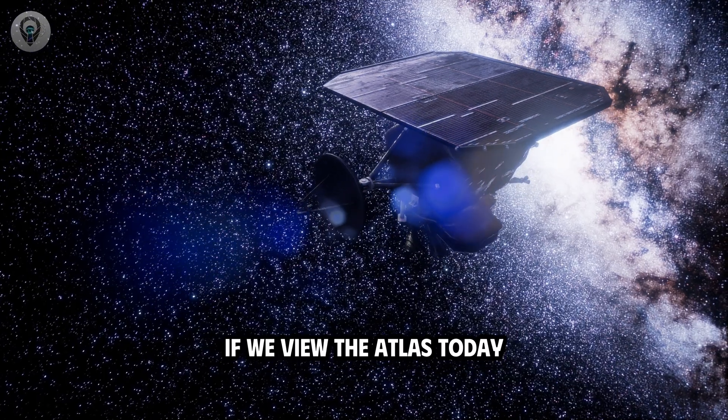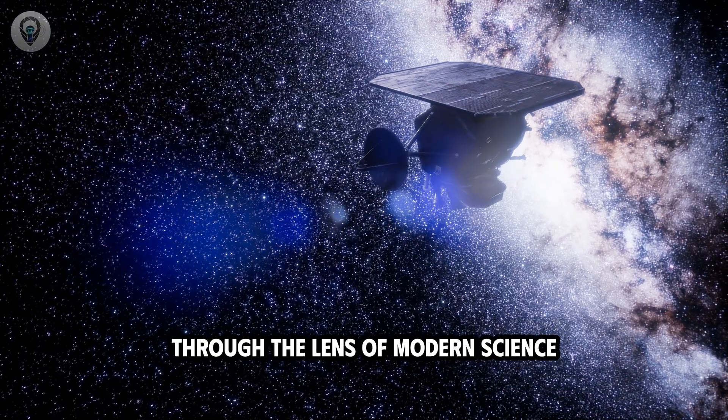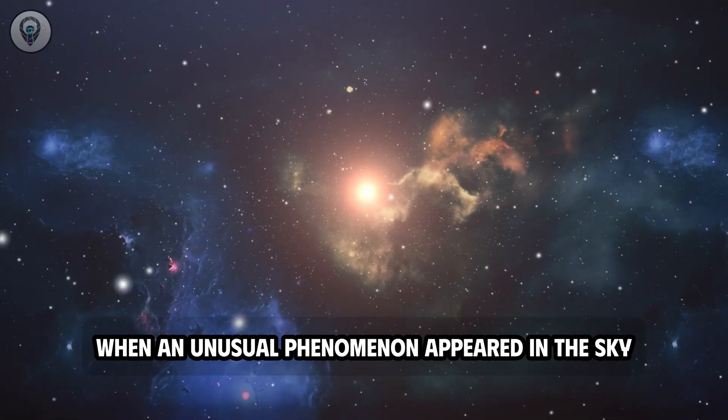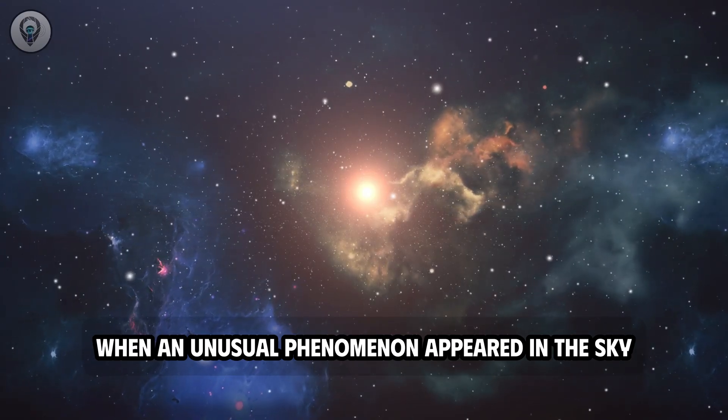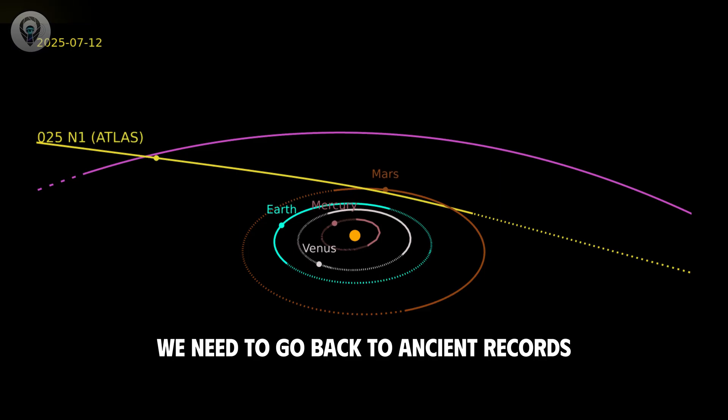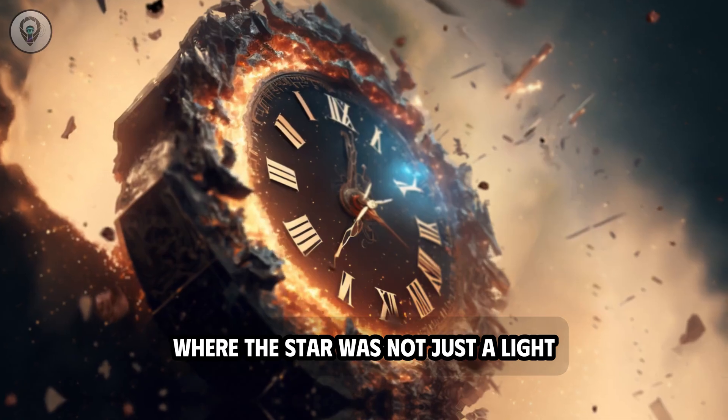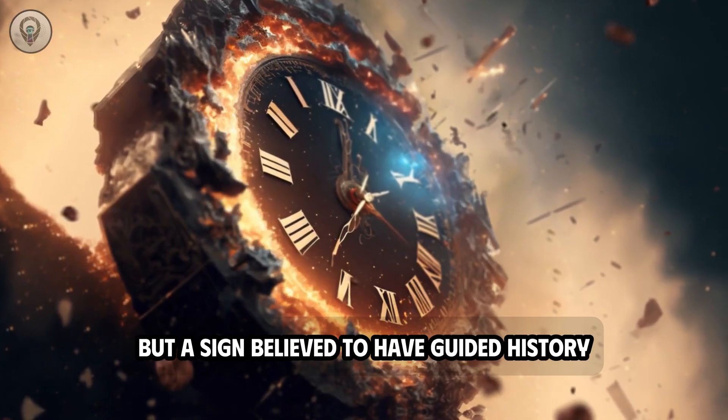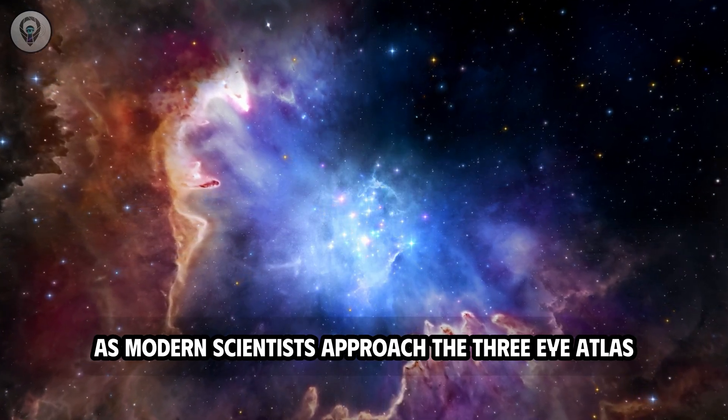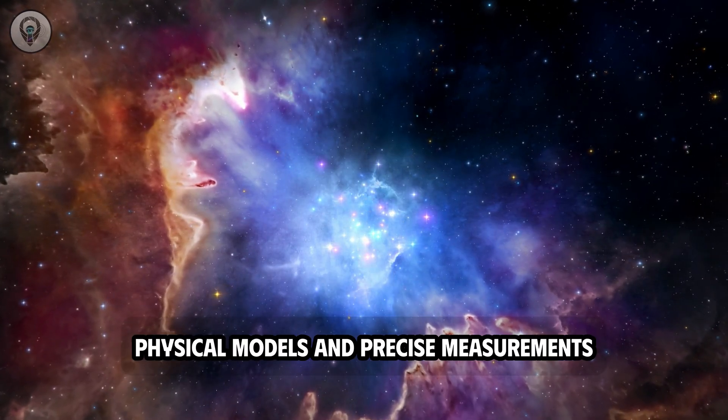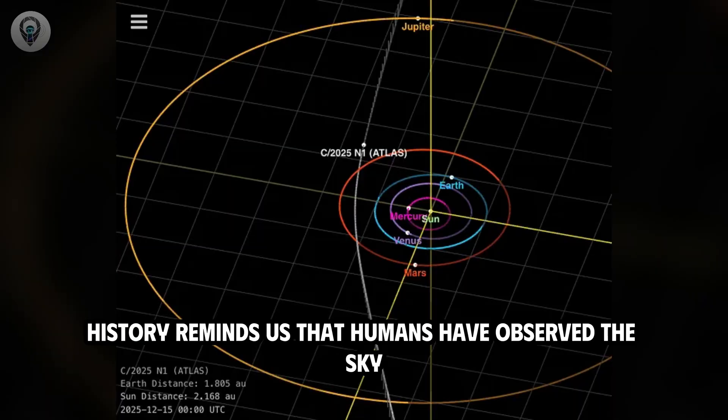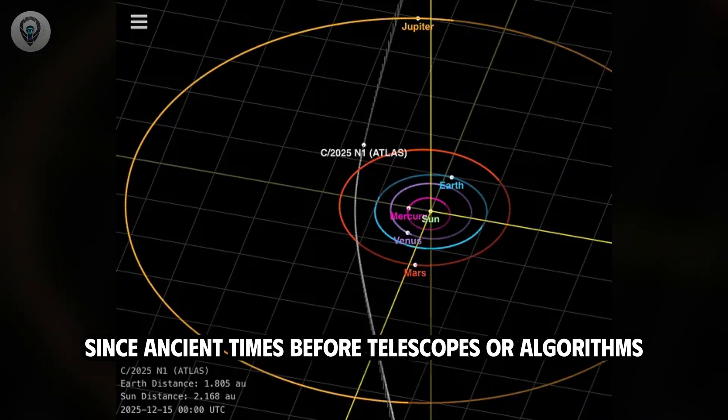If we view the Atlas today through the lens of modern science, what did people see and understand 2,000 years ago when an unusual phenomenon appeared in the sky? To answer that question, we need to go back to ancient records, where the star was not just a light, but a sign believed to have guided history.